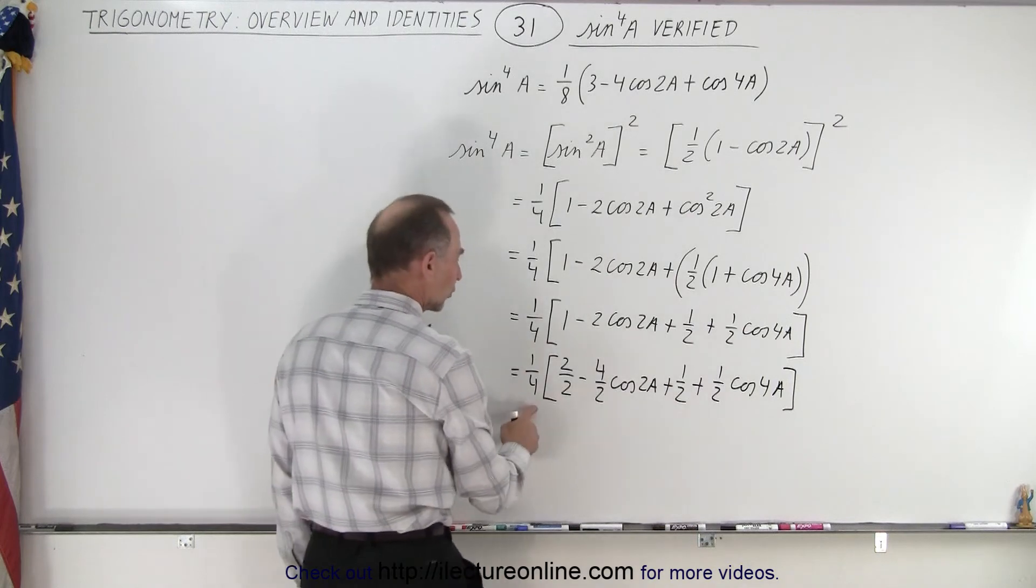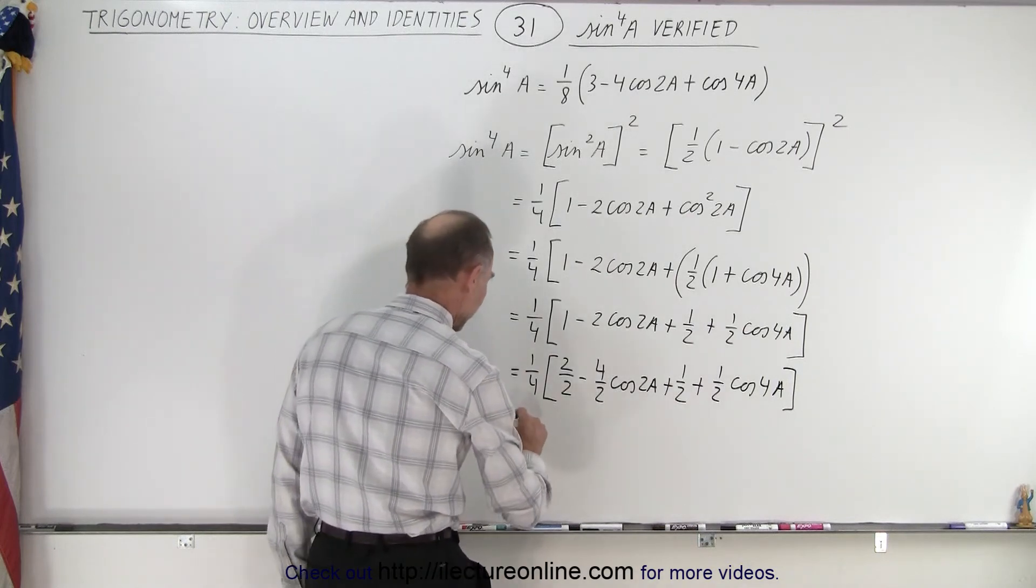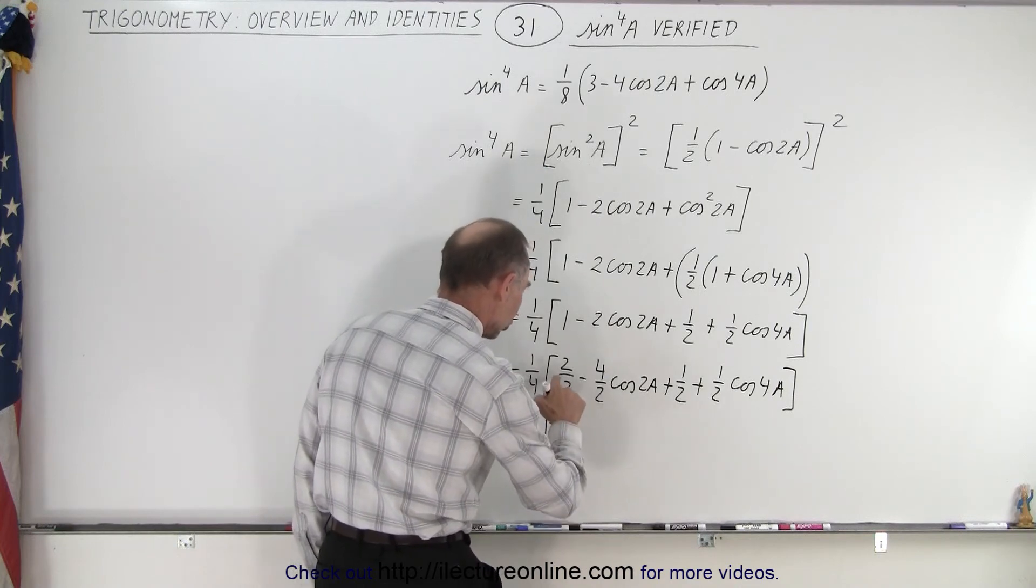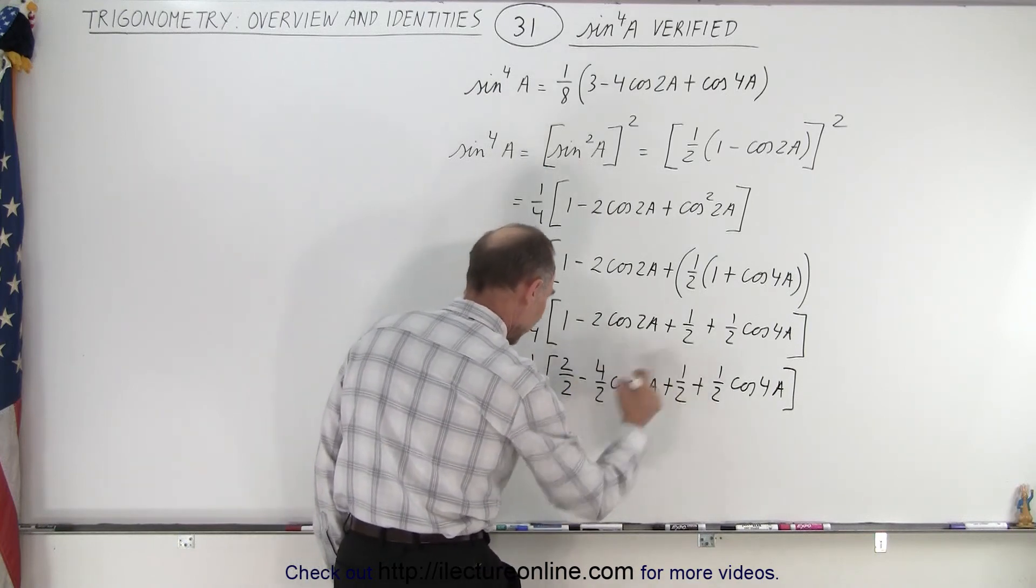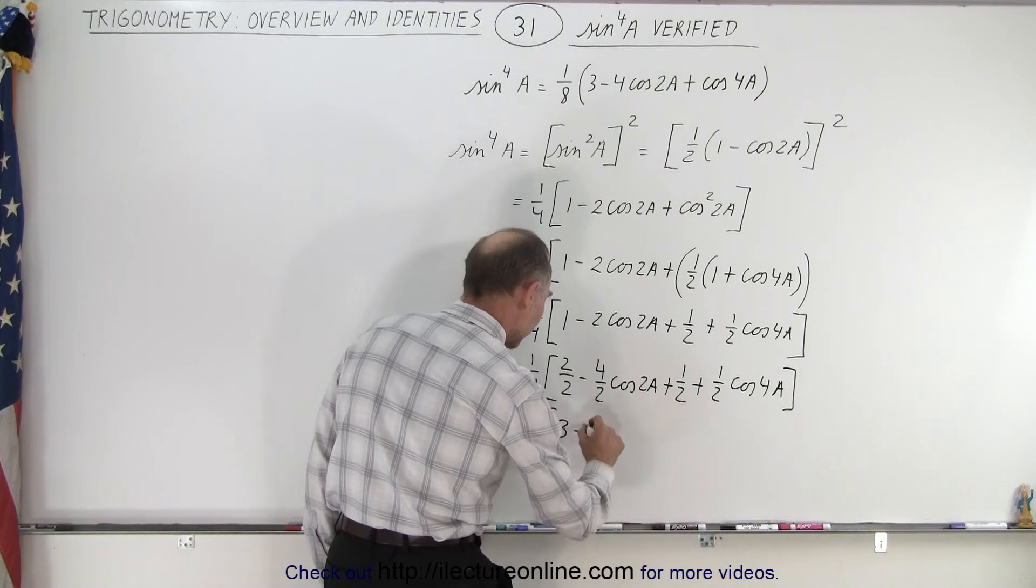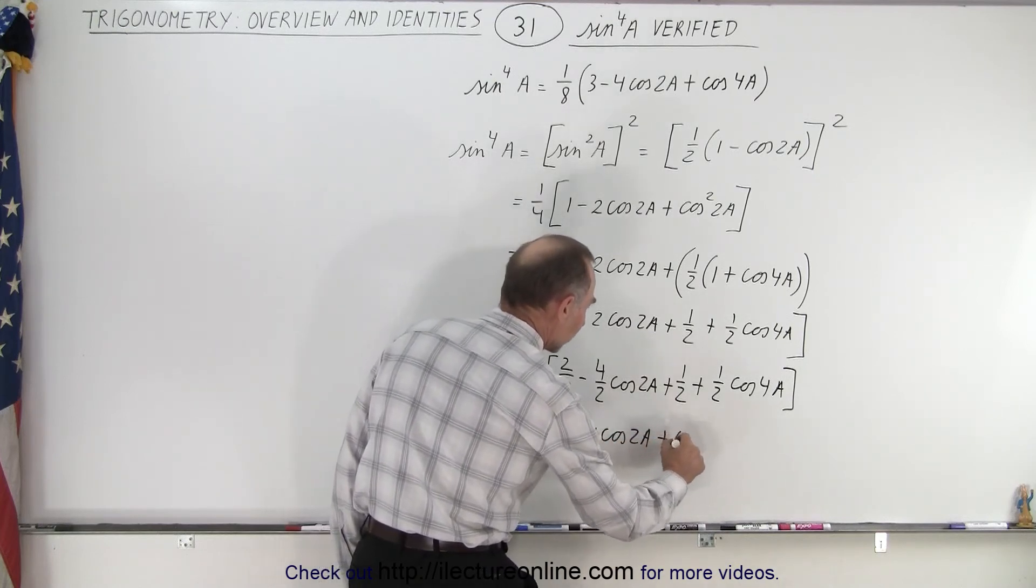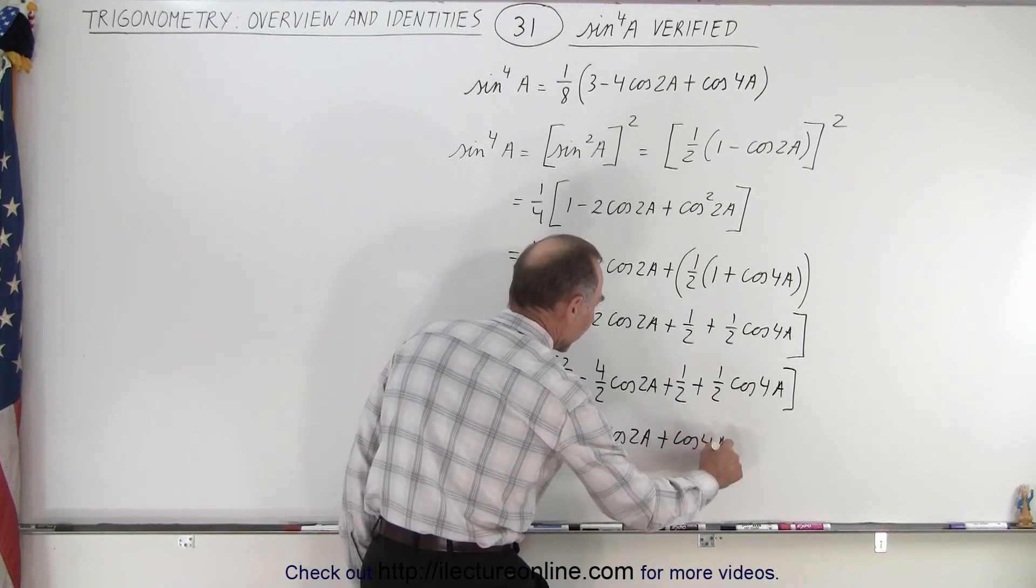Now I can factor out a 1 over 2, and that becomes 1 over 8 times, I have a 2 plus 1 then, that gives me 3 minus 4 times the cosine of 2a plus the cosine of 4a.